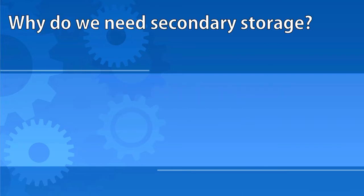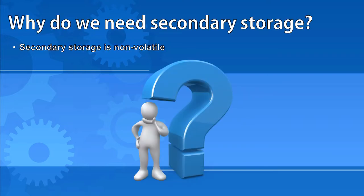RAM is volatile, meaning all its contents are lost when the power is switched off. ROM is not, but it only stores the bootstrap instructions. Secondary storage is needed as a non-volatile location where programs and data can reside while the power is off.